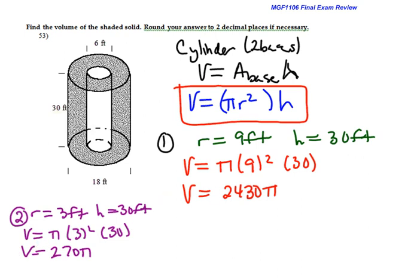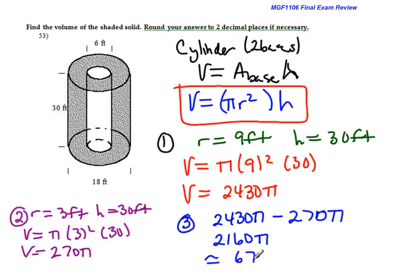So my last step here is to subtract these two shapes, because this is the piece I do not want to include. So I have 2,430 pi minus 270 pi. The exact answer would be 2,160 pi. But looking again, this is round your answer to two decimal places if necessary. So we're going to use 3.14 for pi.